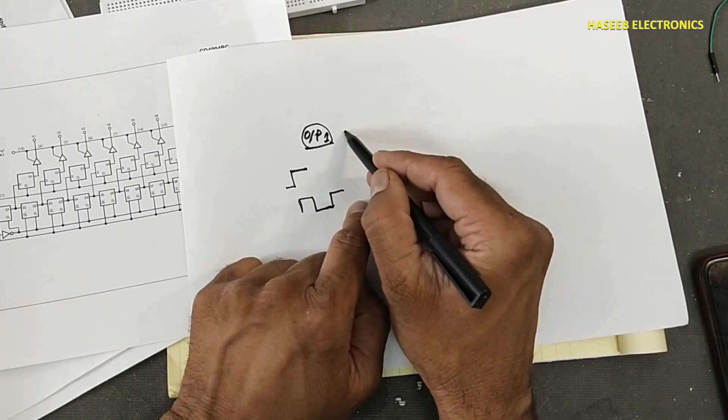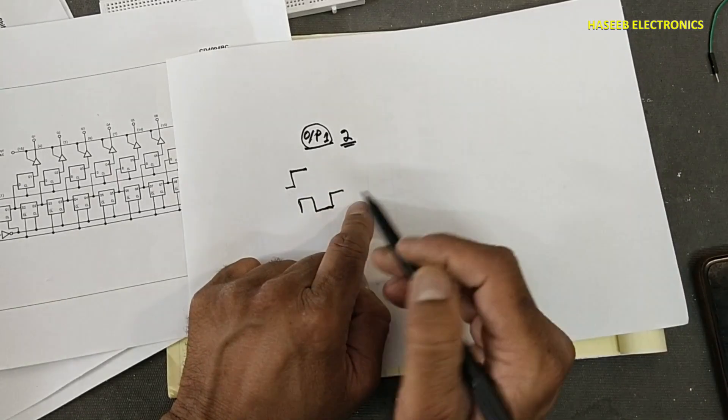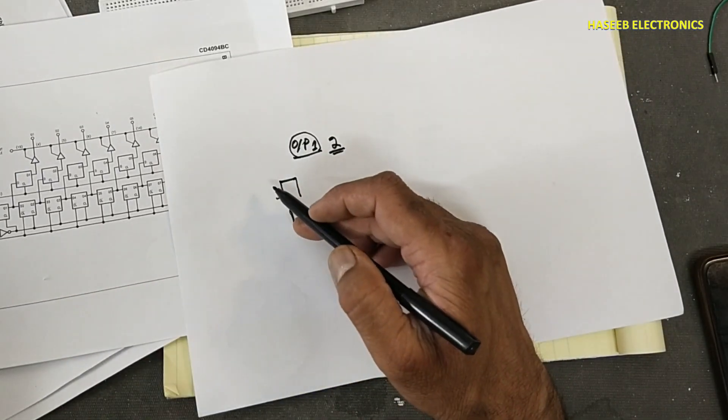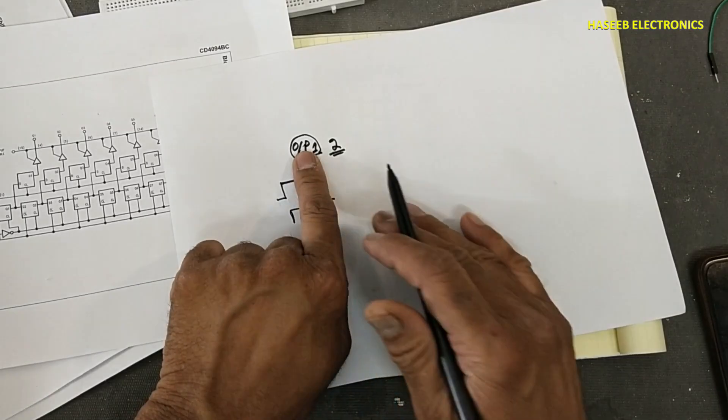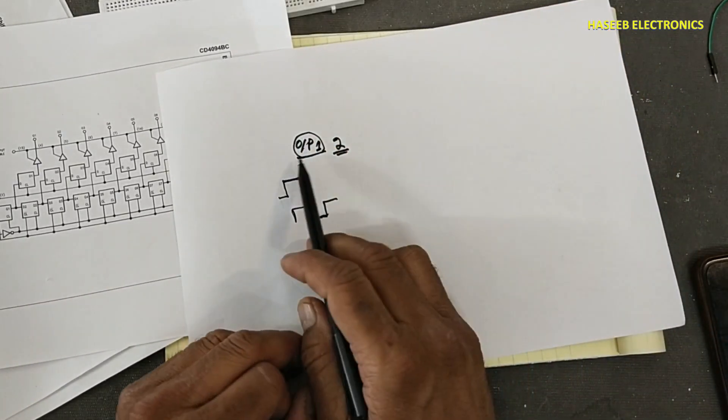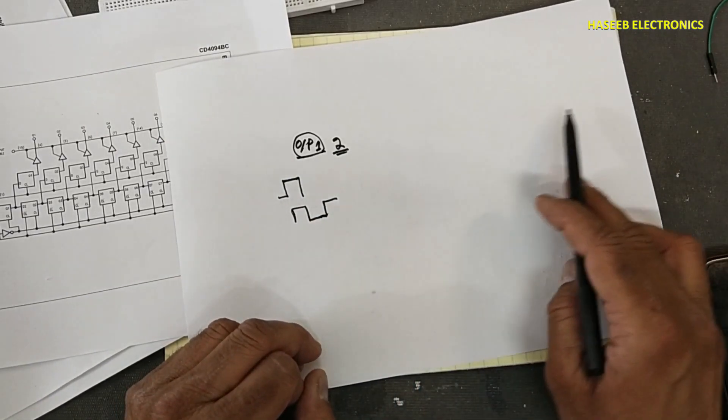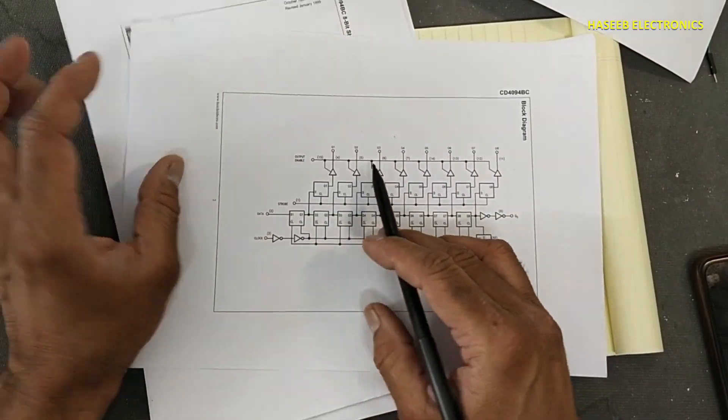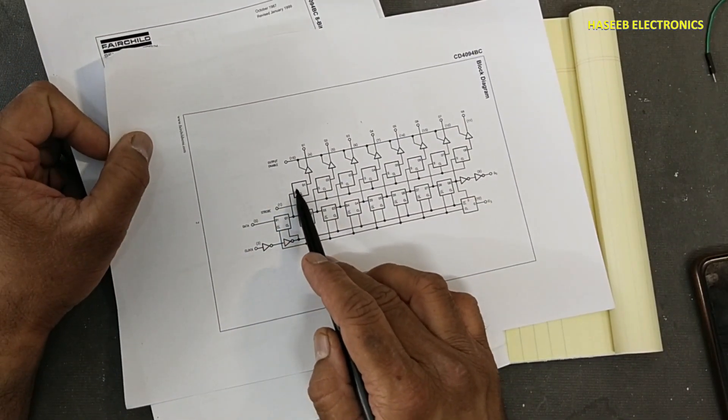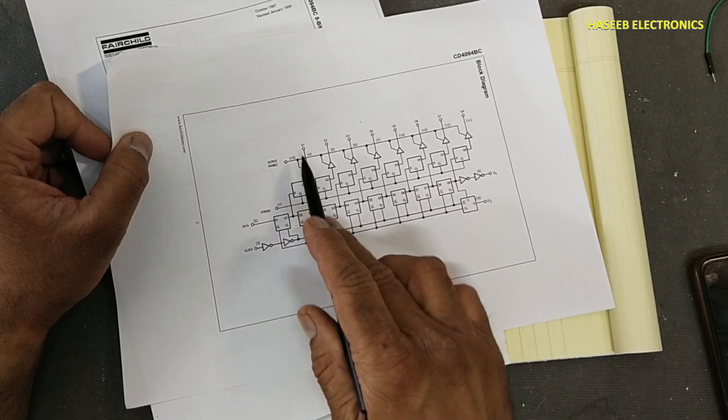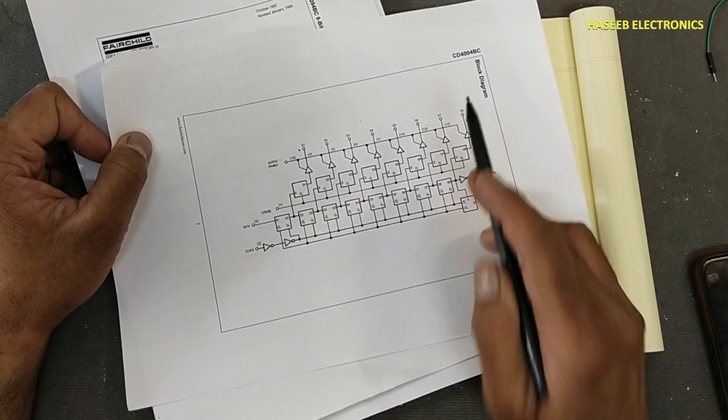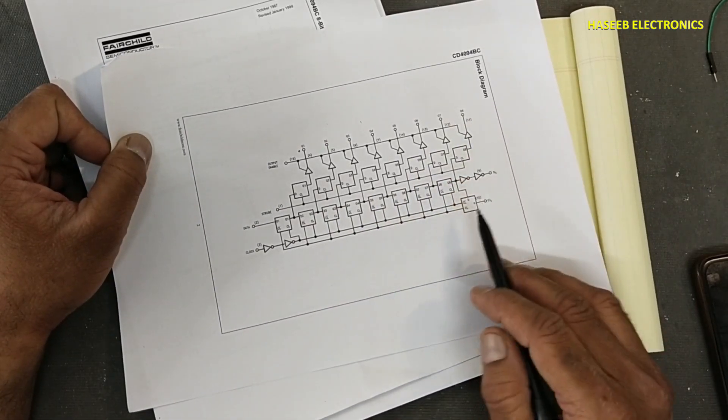If at second clock the input data is zero, output number one will go low and output number two will go high. So this first data input will move step by step. This is its output circuitry. When we enable output enable, the output of this flip-flop will move to the output. It has eight outputs Q1 up to Q8.